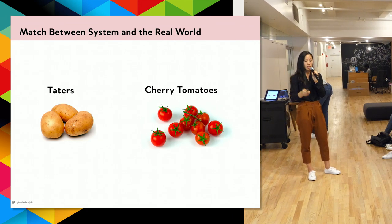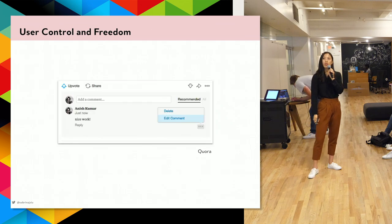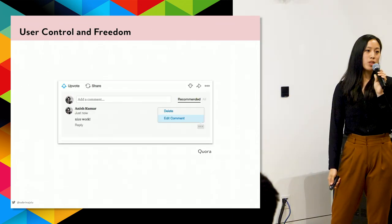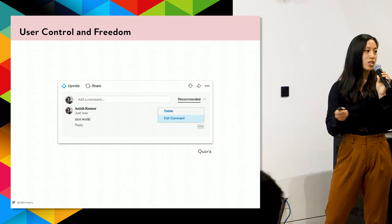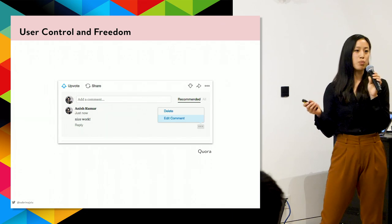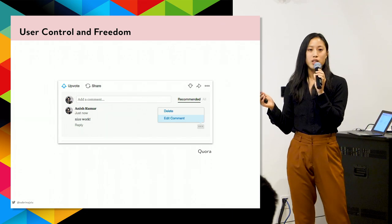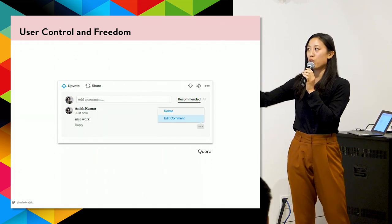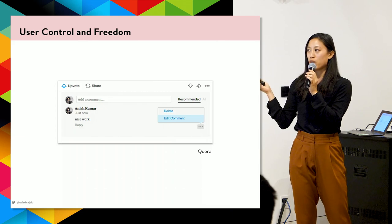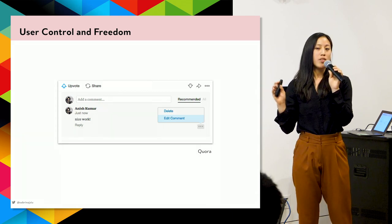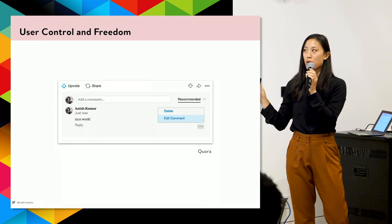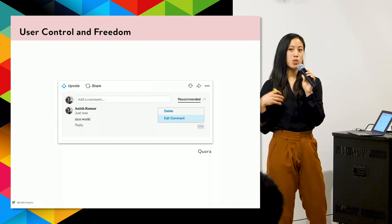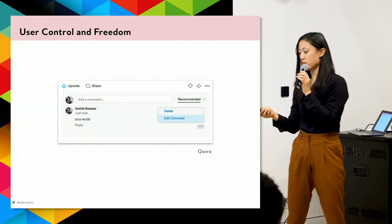User control and freedom is important because we click around all the time, stumble into places, or leave a comment we want to delete or edit. Having this ability in products helps us feel in control — the product is not using us, we're using the product.